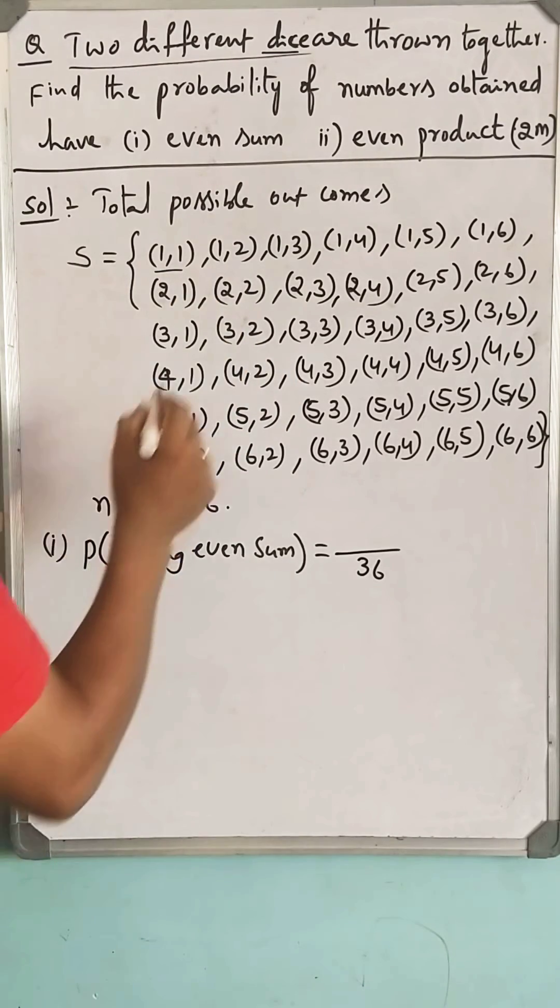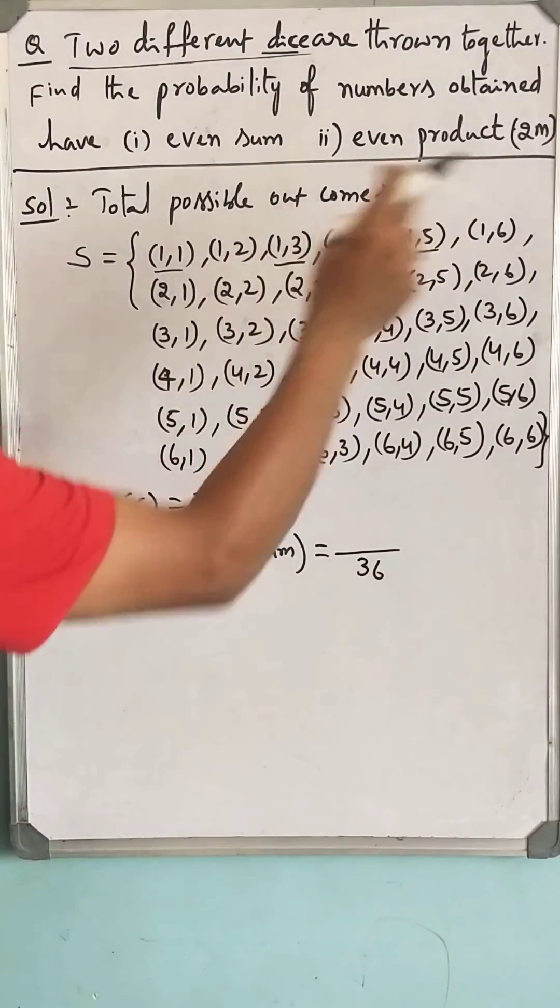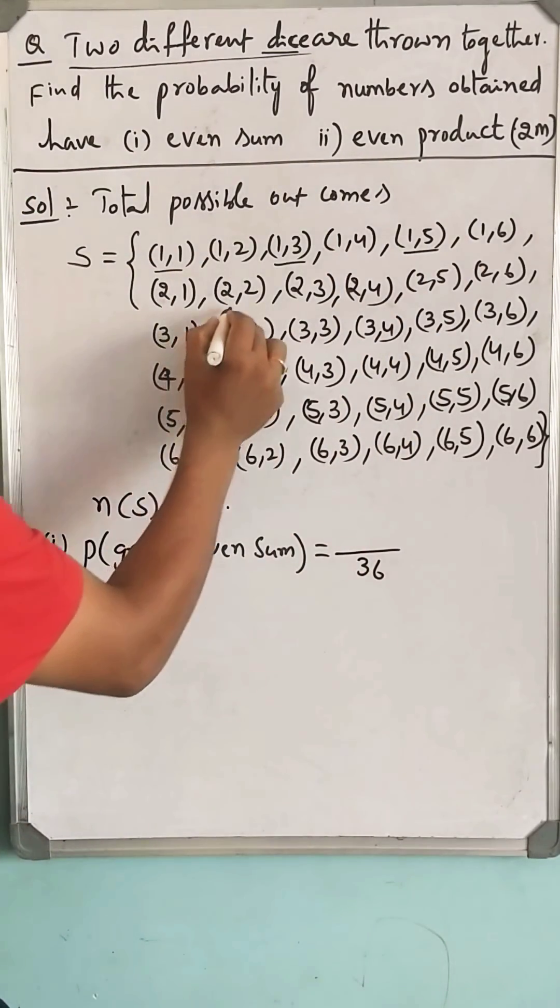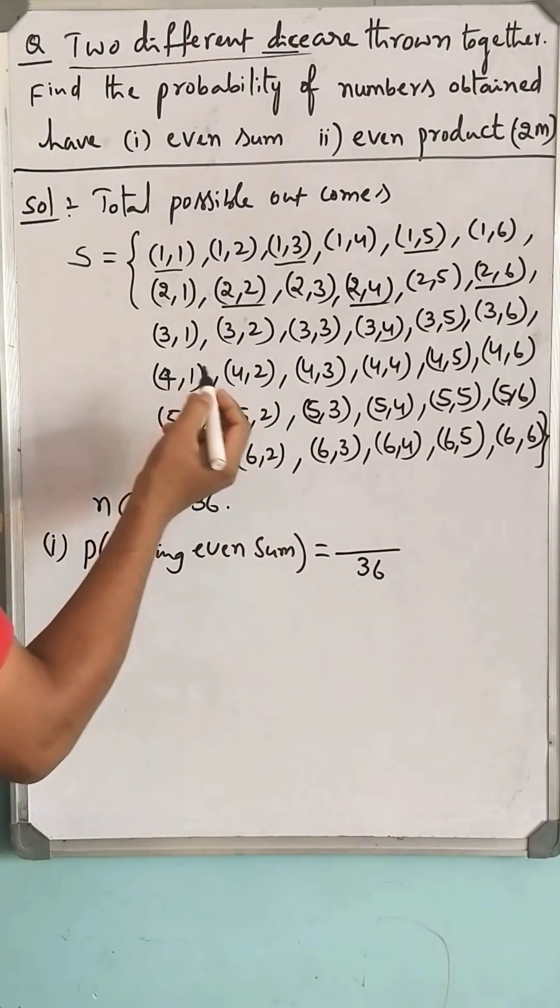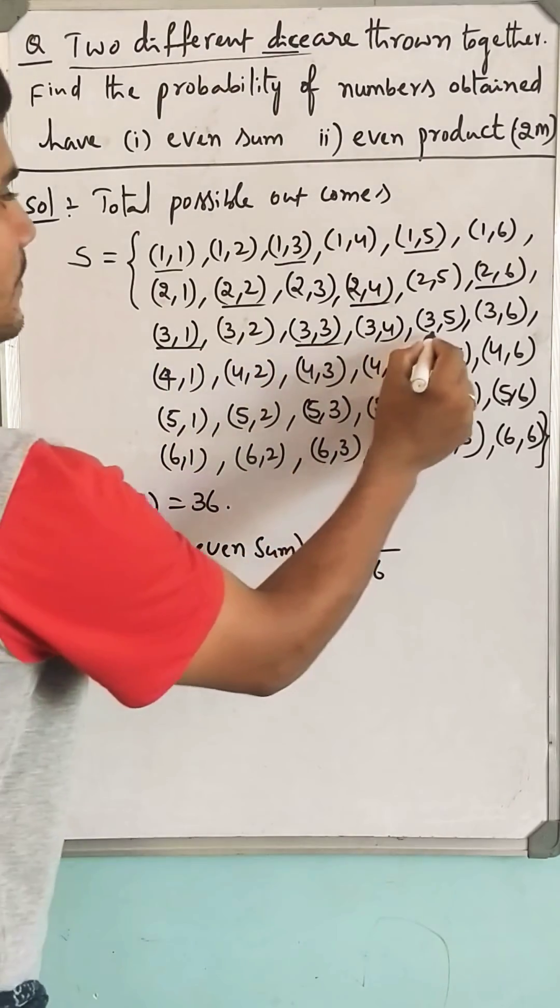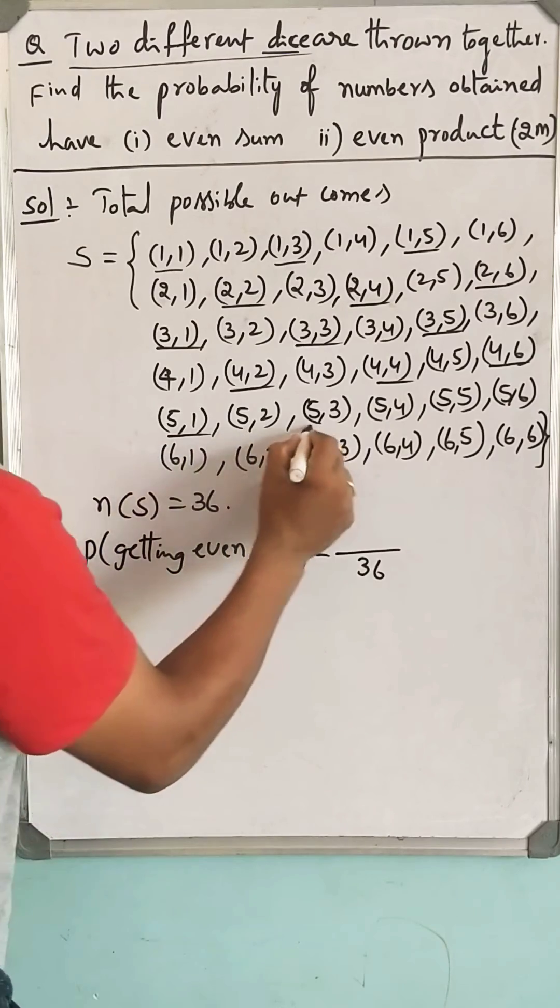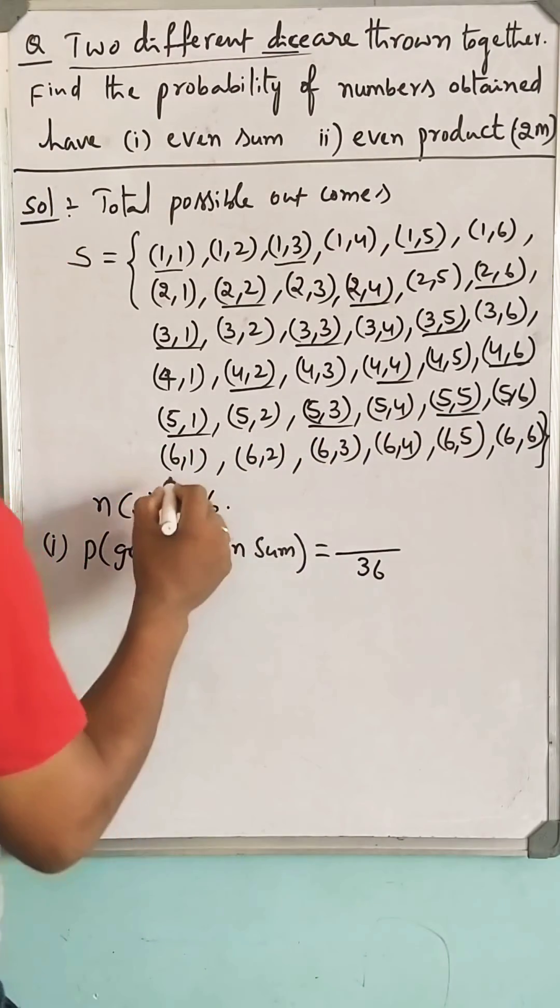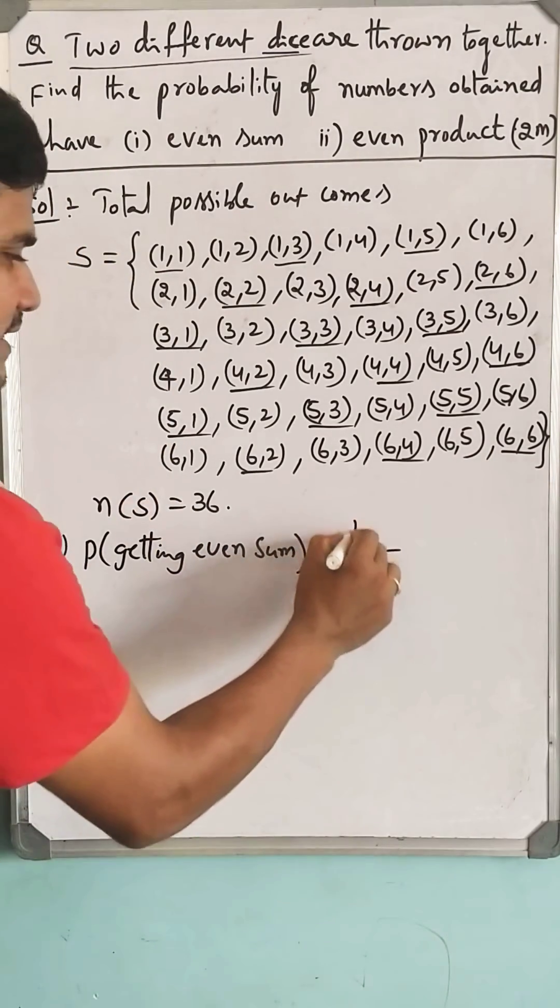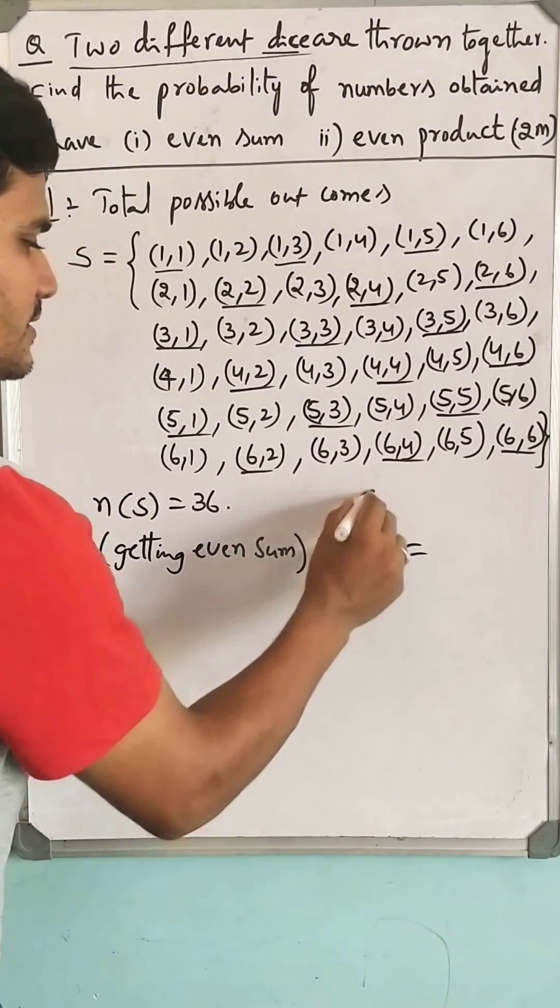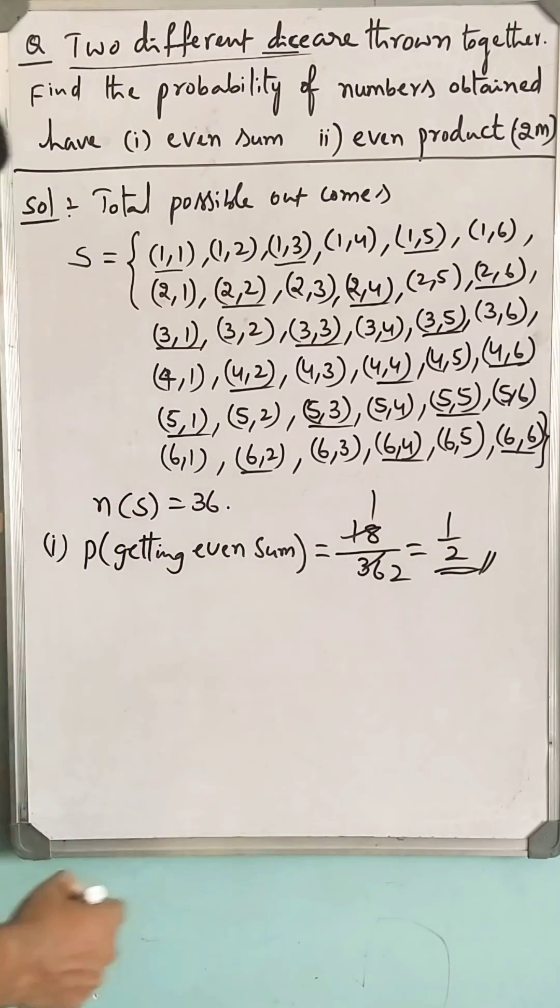One plus one is two, even, even, even. See, in this row we can observe three. Similarly, in each row we can observe three pairs, which means 6 times 3 is 18. 18 out of 36, one by two, 50% probability.